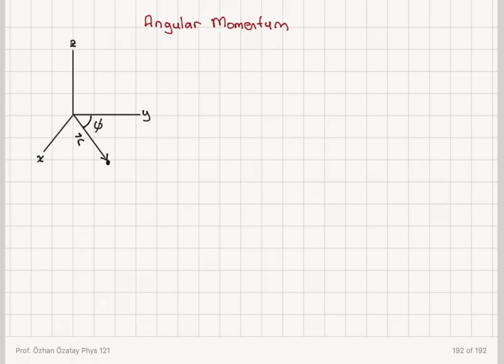The position vector r of the particle is making an angle phi with respect to the y-axis, and this particle has a linear momentum p. It's moving on the xy plane.